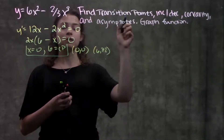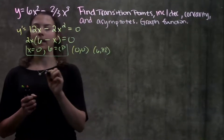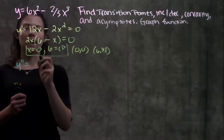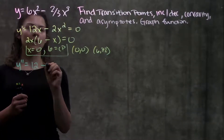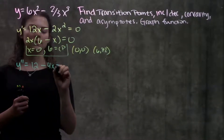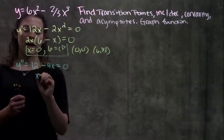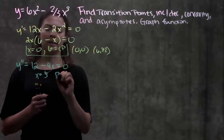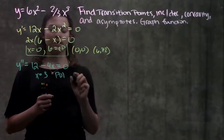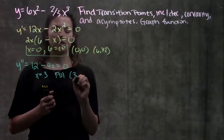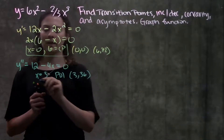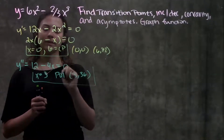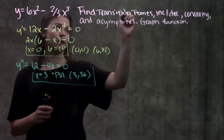My next transition points are my points of inflection. Remember, that's where the second derivative equals zero. When I solve for the second derivative I get 12 minus 4x. Setting that equal to zero gives x equals positive 3. When you plug that into your original function you get the corresponding coordinate. So here are my critical points, here are my points of inflection — transition points are done.